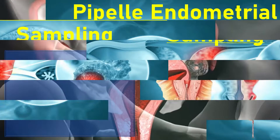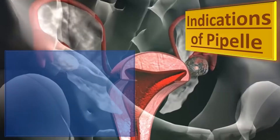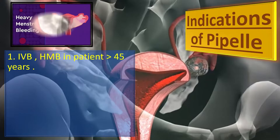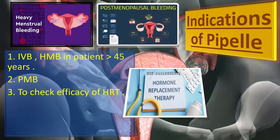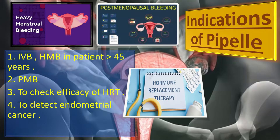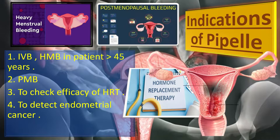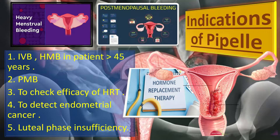The indications of pipel include first of all irregular vaginal bleeding, heavy menstrual bleeding in patients of more than 45 years of age, postmenopausal bleeding, to check efficacy of hormone therapy like tamoxifen, to detect endometrial cancer and precancerous conditions prior to surgery, and to detect luteal phase insufficiency as a workup of infertility.